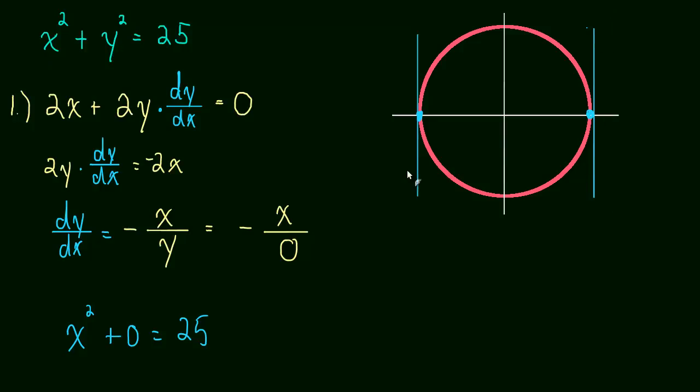The slope of a vertical line is undefined. So, hopefully, this derivative, dy dx is equal to negative x over y, is starting to make some sense to you that, yeah, that really does give you the slope at every point on this circle. As long as you remember that y, for every one x, you're going to get two y values, a positive y and a negative y.